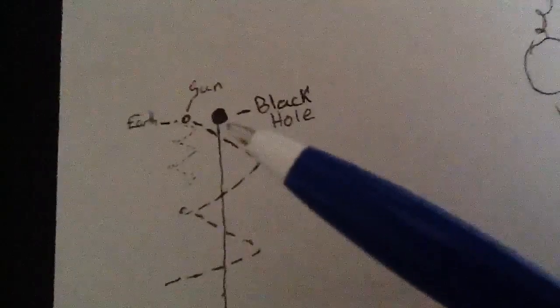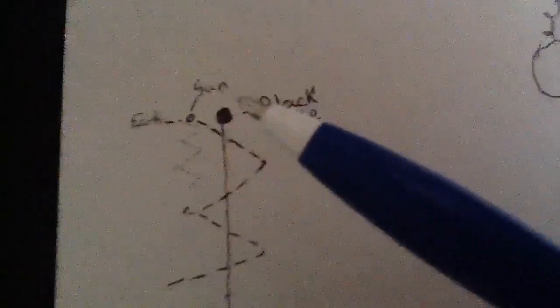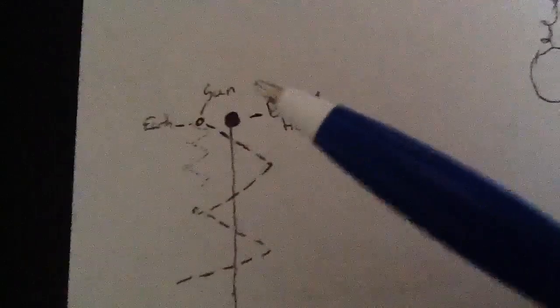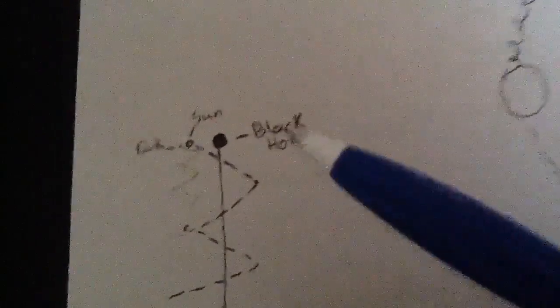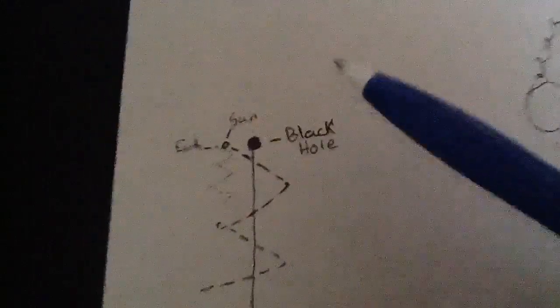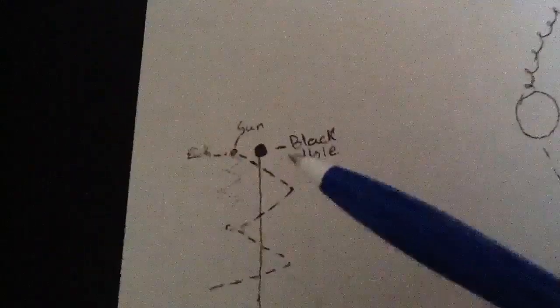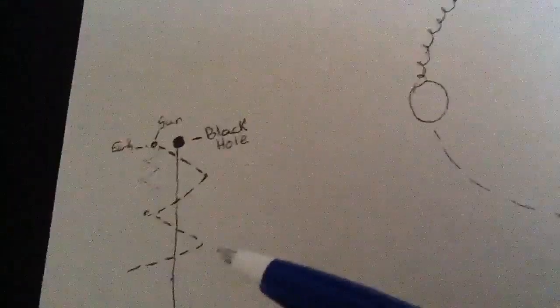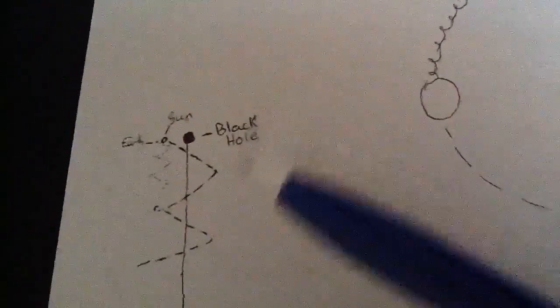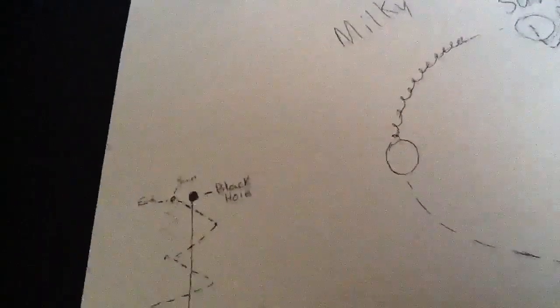And therefore, the black hole must then theoretically be either pulled by something or... I would assume it has to be. There has to be something over here that this is revolving around. And if this is all the case, then wouldn't you say that everything is moving in one direction through space? The whole galaxy and maybe universe?